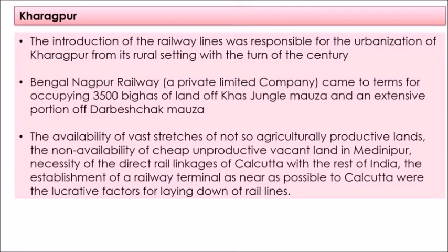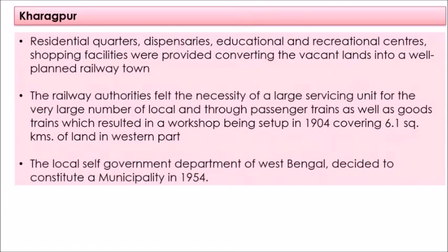Kharagpur was a suitable place for developing a railway terminal and, with it, a township. The railway terminal was established because of the necessity of direct rail linkages of Calcutta with the rest of the country. With the railway terminal, the railway town of Kharagpur was planned with residential quarters, dispensaries, education and recreational centers.